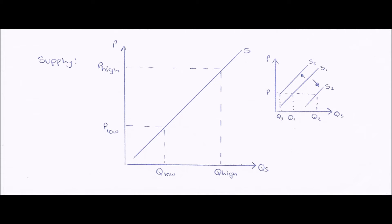Next we have supply curves. Supply curves also have price on the y-axis and quantity supplied on the x-axis, but unlike demand curves they slope upwards from left to right. If the price is high, there is more profit to be made, so more businesses will enter the market and start producing that good, meaning supply will be high. If the price is low, profit margin is low, fewer businesses will enter, so quantity supplied will also be low.